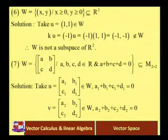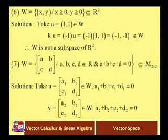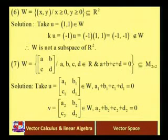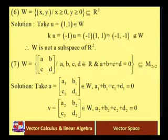The next example: W is a subset of the set of 2×2 matrices — W equals {[A B; C D] where A, B, C, D belong to R and the condition is A + B + C + D = 0}. We prove this is a subspace. Take U = [A1 B1; C1 D1] belonging to W, so A1 + B1 + C1 + D1 = 0. Again, V = [A2 B2; C2 D2] belongs to W, so A2 + B2 + C2 + D2 = 0.